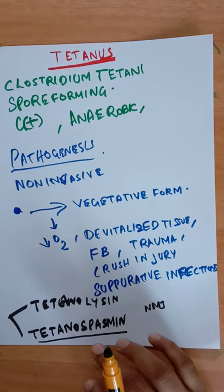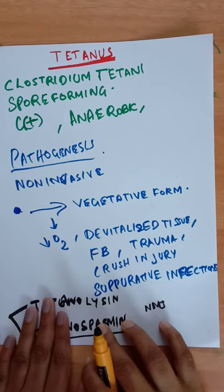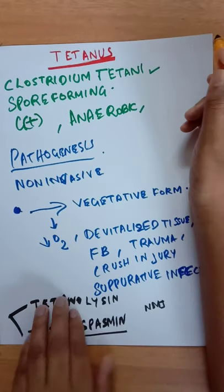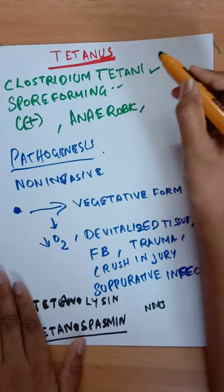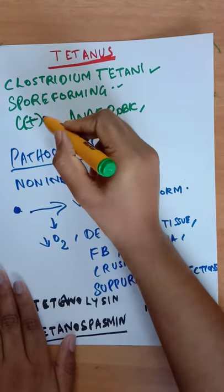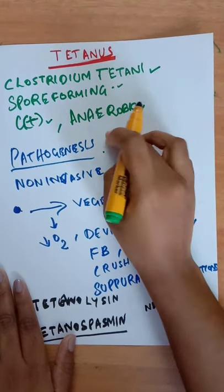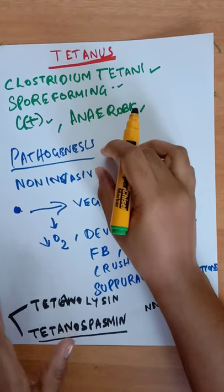We will make notes on tetanus. Tetanus is caused by the bacterium Clostridium tetani, and it is a spore forming bacteria. It is anaerobic, gram positive, and motile bacillus.